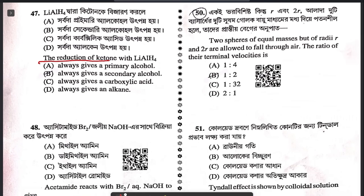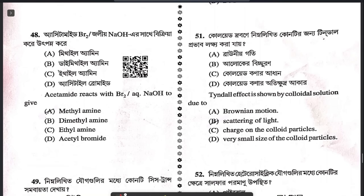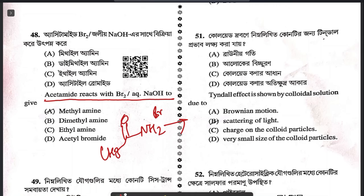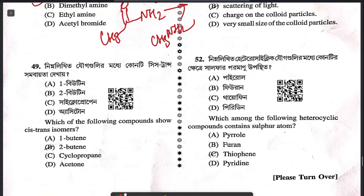Question 47: the reduction of a ketone with LiAlH₄ — ketone will reduce to a secondary alcohol. Nothing else is possible. Question 48: acetamide reacts with bromine in aqueous NaOH — this is Hoffmann bromide degradation. CH₃CONH₂ reacts with Br₂ and NaOH to form CH₃NH₂, which is methylamine.